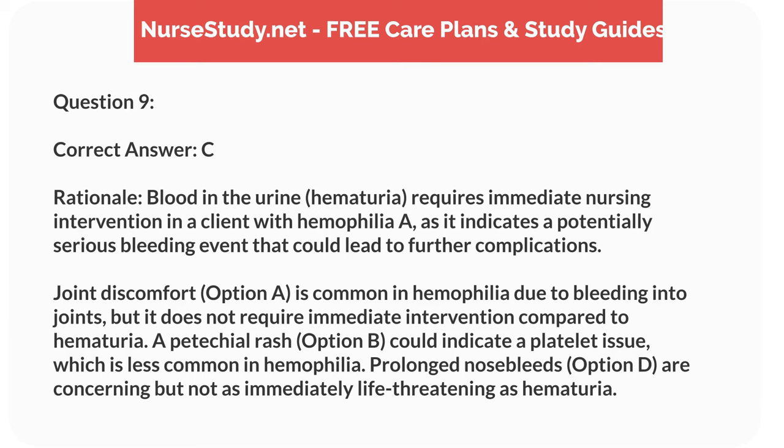Correct answer: C. Rationale: blood in the urine, hematuria, requires immediate nursing intervention in a client with hemophilia A, as it indicates a potentially serious bleeding event that could lead to further complications. Joint discomfort, option A, is common in hemophilia due to bleeding into joints, but it does not require immediate intervention compared to hematuria. A petechial rash, option B, could indicate a platelet issue, which is less common in hemophilia. Prolonged nosebleeds, option D, are concerning but not as immediately life-threatening as hematuria.